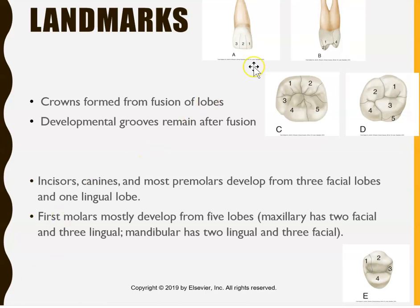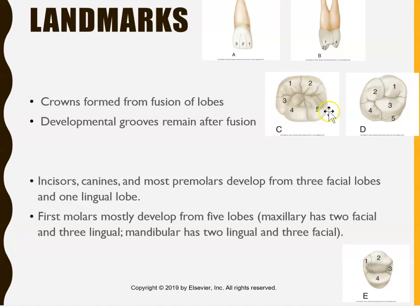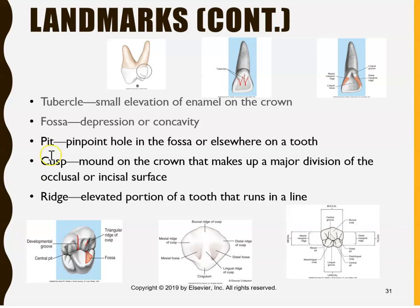Incisor teeth and molars have lobes — there's a lobe here, here, and here, and they mesh together when the tooth is formed. The same is true for molar teeth: you can see five lobes initially that mesh together. As they mesh, you get grooves — the lines you see in between or on the occlusal biting surface are grooves formed when the lobes fuse together.